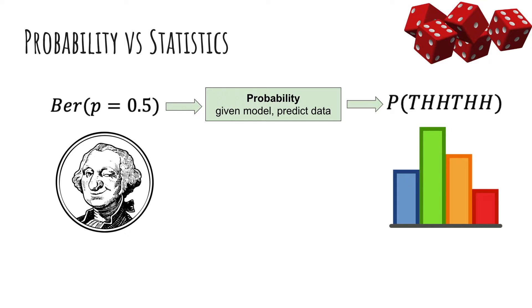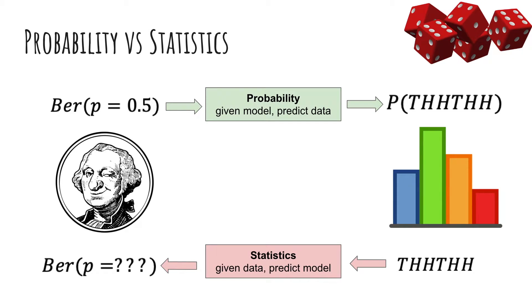What we're going to focus on now is going the opposite way. So given there's this coin, I don't know what the probability of heads is, but I flip it and I get tail, head, head, tail, head, head. How can I use the data to predict this value of P?